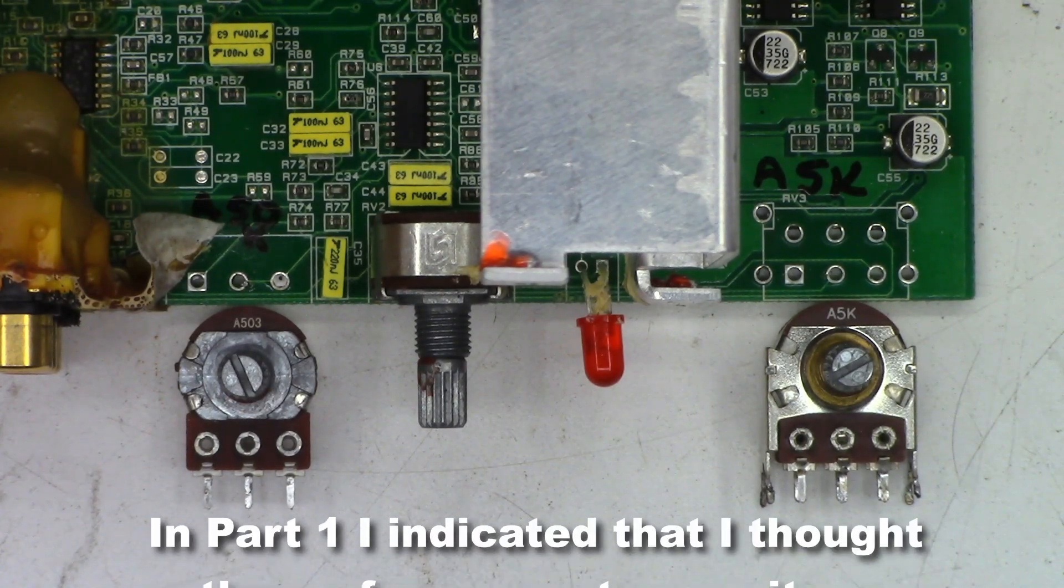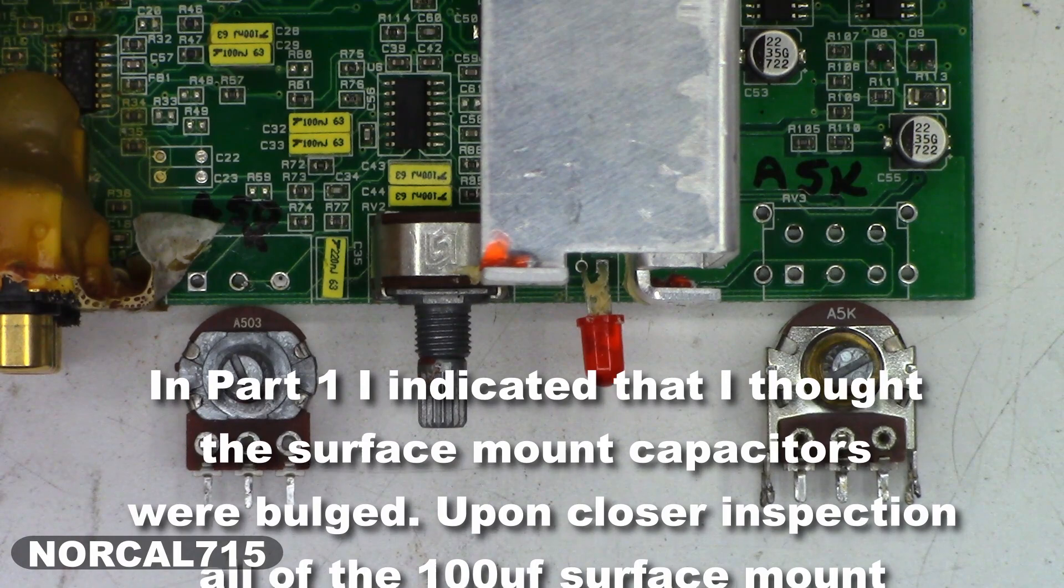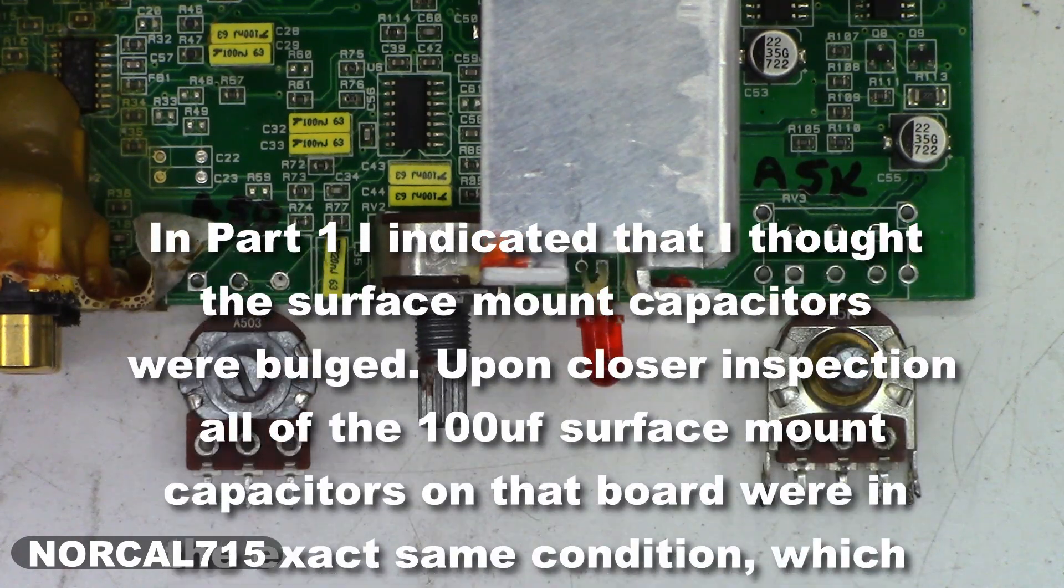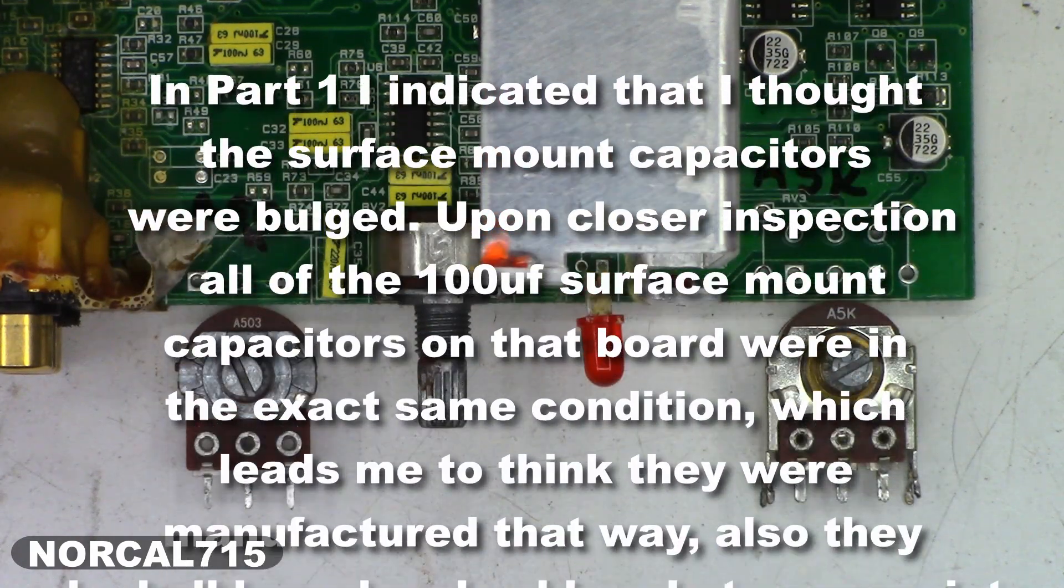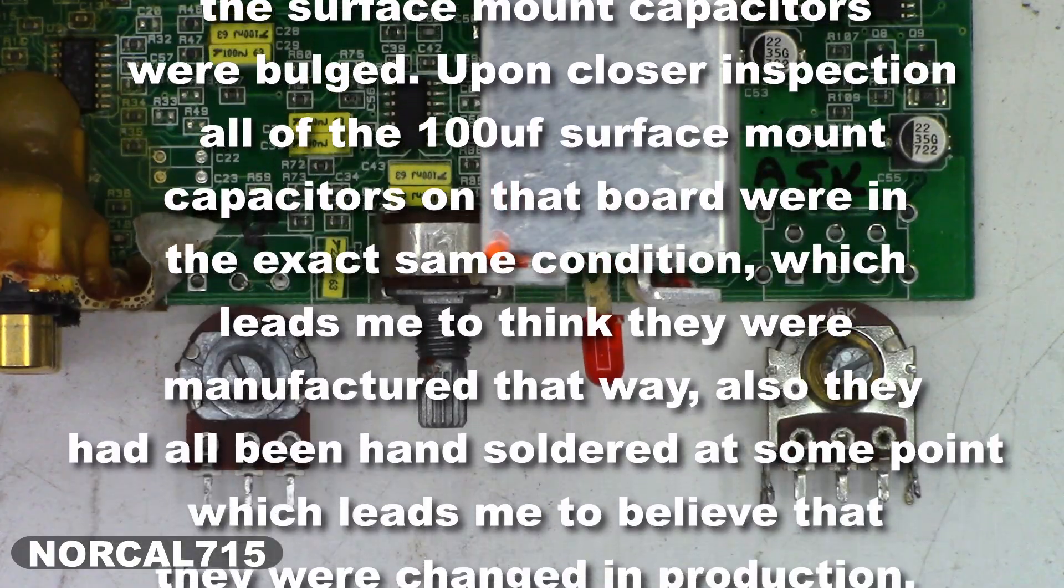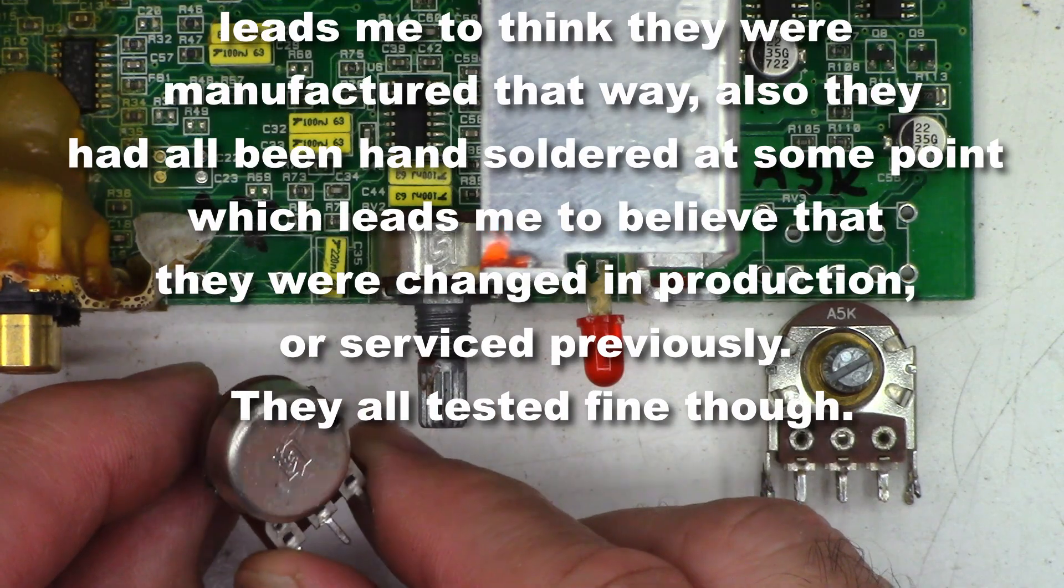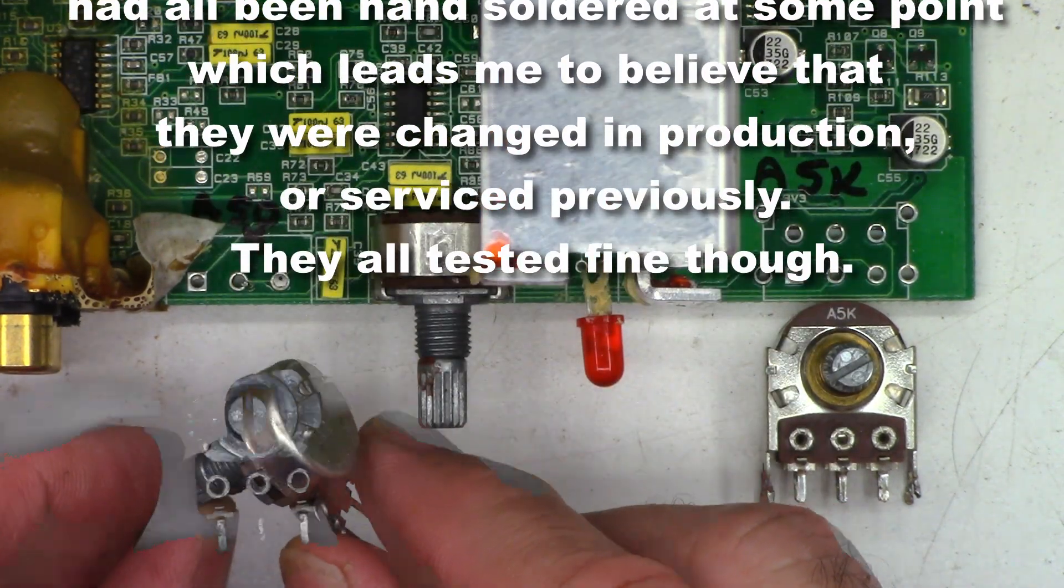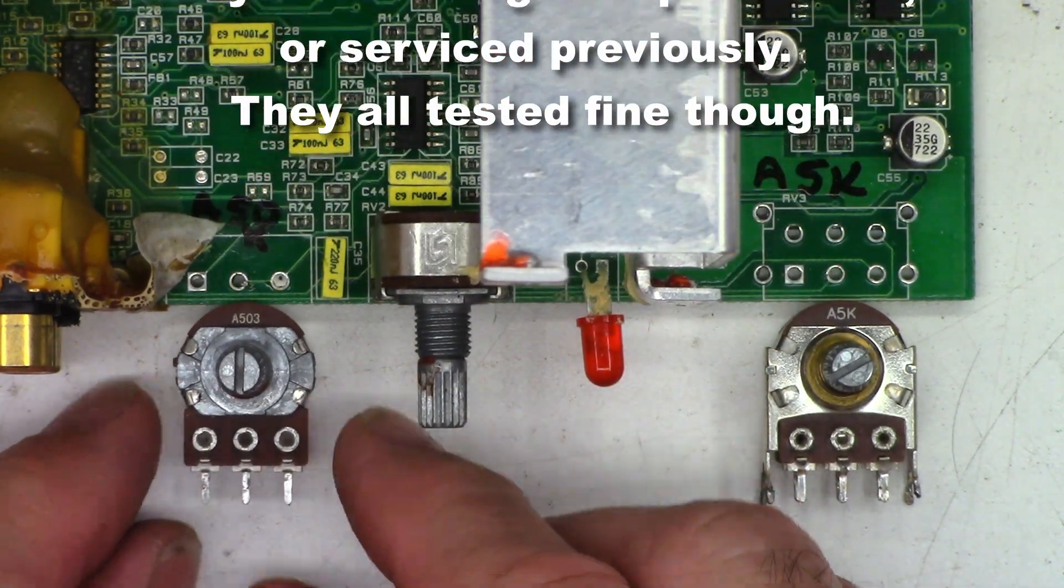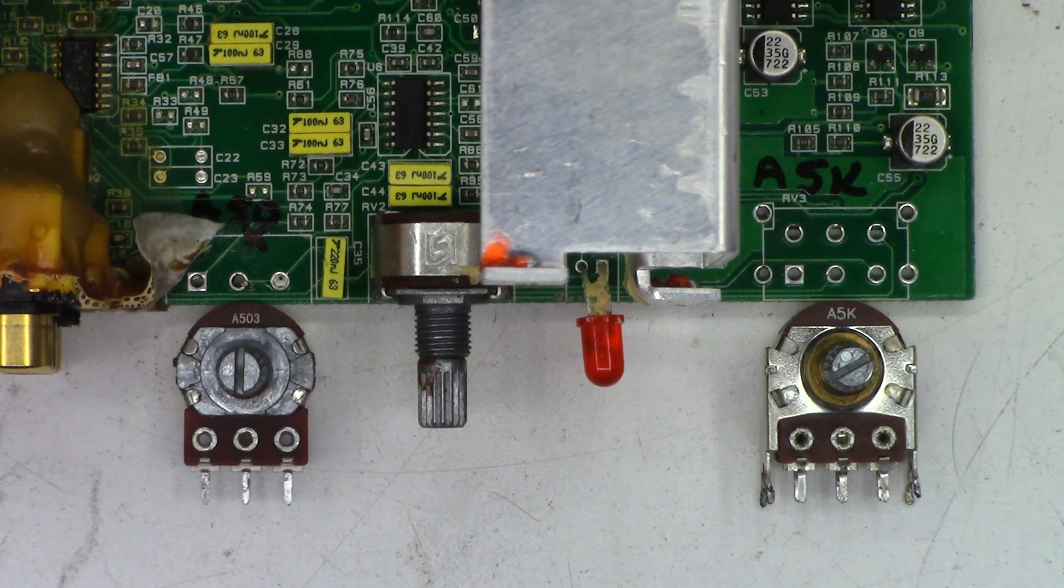Okay, welcome back to part two of the Definitive Technology SuperCube 3 Repair. The customer did approve the estimate. I ordered some parts, but first, remember the pot that I couldn't find any data on whatsoever? Nothing listed on the back or underneath. It is an Audio Taper 50K pot, an A503, as well as the main level control pot is an Audio 5K.